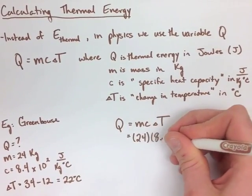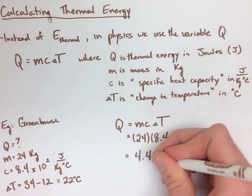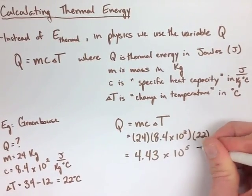So we plug in all of our numbers, and we end up getting a thermal energy of 4.43 times 10 to the 5 joules.